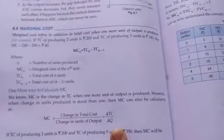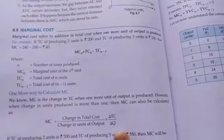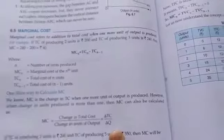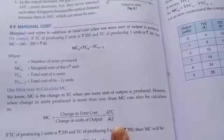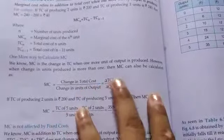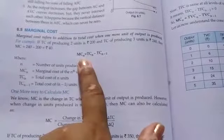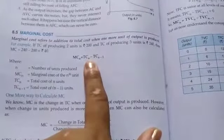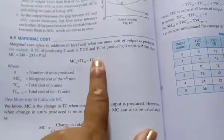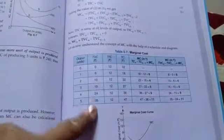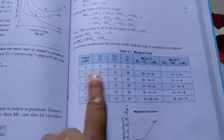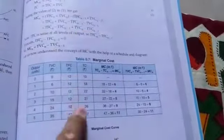Now, marginal cost is the additional addition to the total cost when one extra unit is produced. There are two formulas: marginal cost is change in total cost divided by change in output. Or, marginal cost of the nth unit equals total cost of the nth unit minus total cost of the (n−1)th unit. Output is given, TVC and TFC are given; total cost is calculated by adding TFC and TVC.